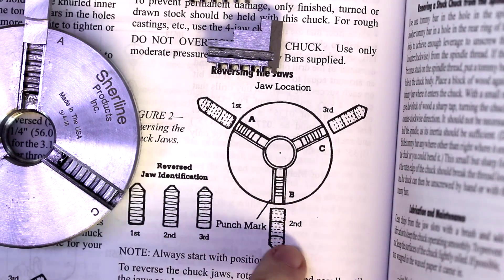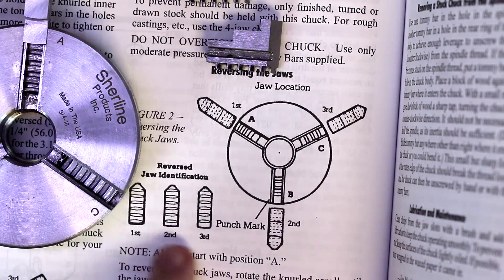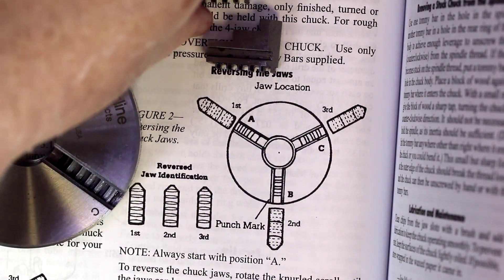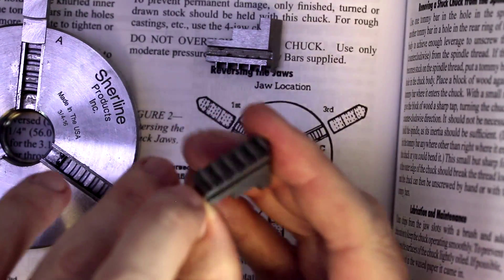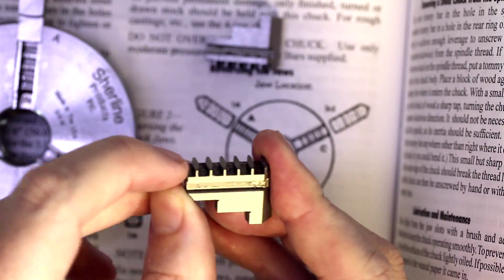Now it shows our second jaw is to be the B position, and it is the jaw with the tooth in the middle distance from the back.